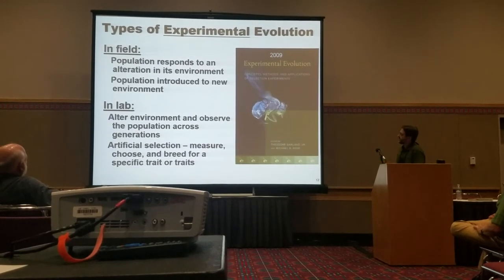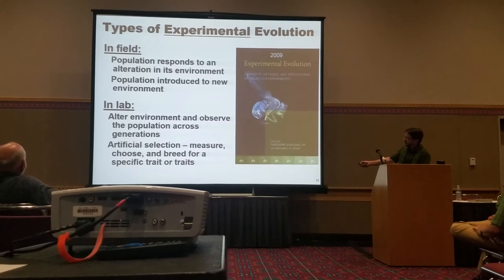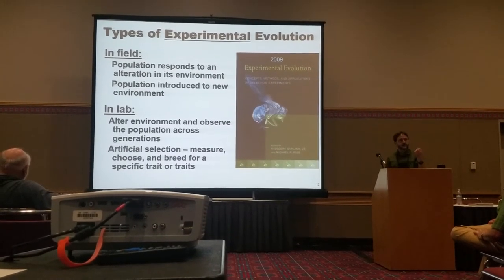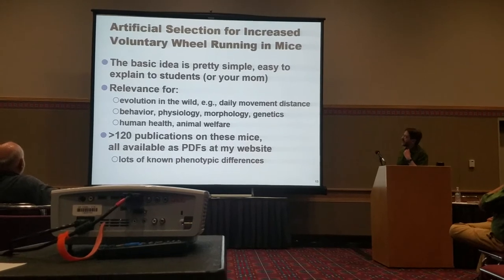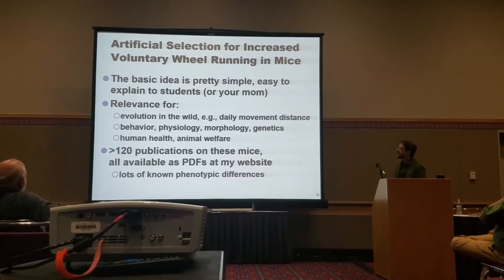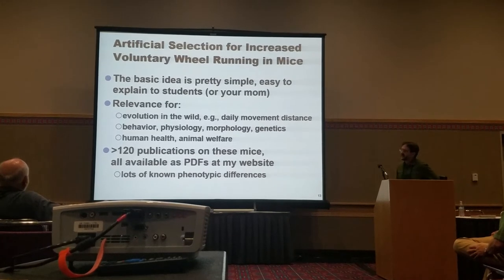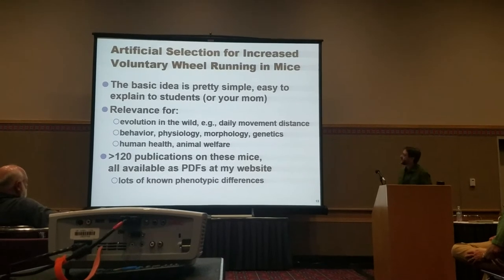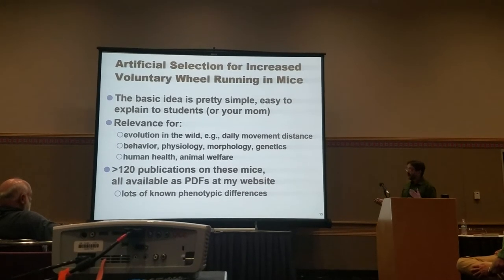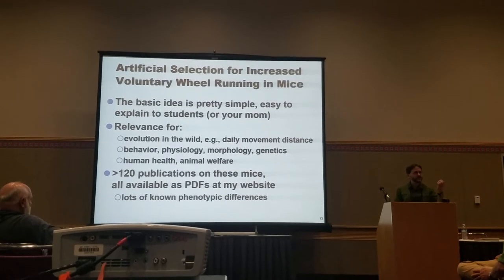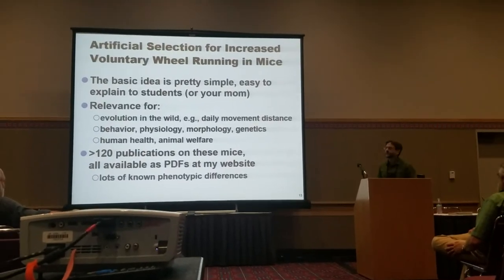This is a book Michael Rosen and I edited a few years ago that goes through different types of selection experiments and experimental evolution, some done in the wild. The basic idea of this selection experiment is pretty simple — you get a bunch of mice, let them run on wheels, pick the high runners and breed them. The phenotype we study is how much they voluntarily run on wheels, which is relevant in the wild — something like a homing distance or range size. It involves subordinate traits in behavior, motivation, physiology, muscle function, and skeletal function.